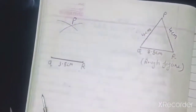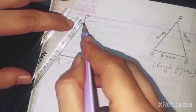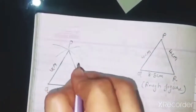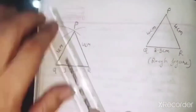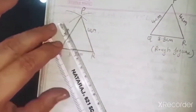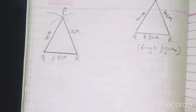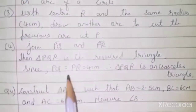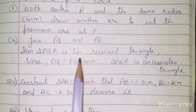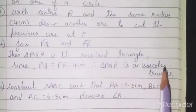Label the intersection point P. Step 4: Join PQ and PR. PQ is 4 cm and PR is also 4 cm. Measuring confirms both are exactly 4 cm. Since PQ equals PR, that is 4 cm each, therefore triangle PQR is an isosceles triangle.